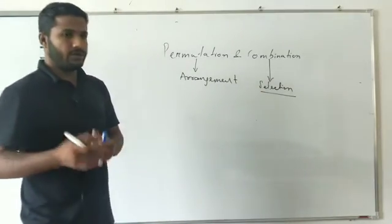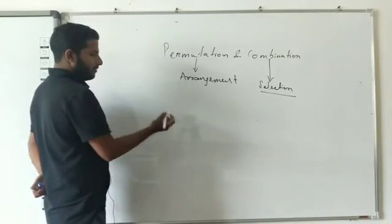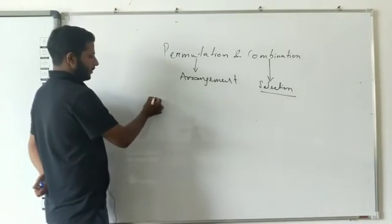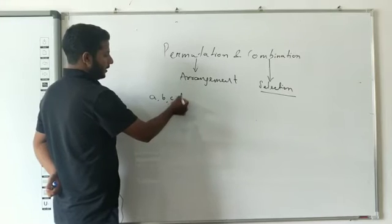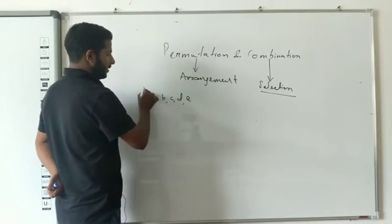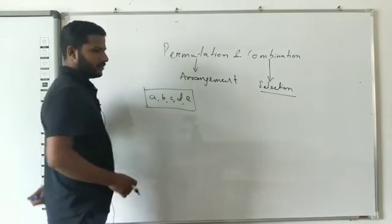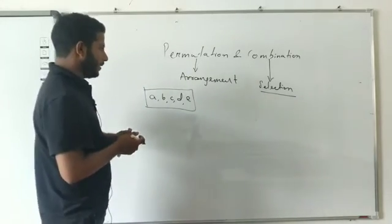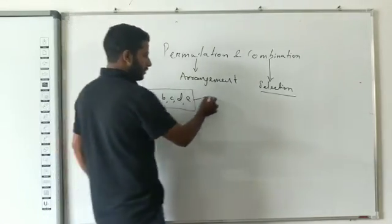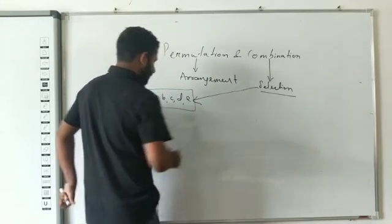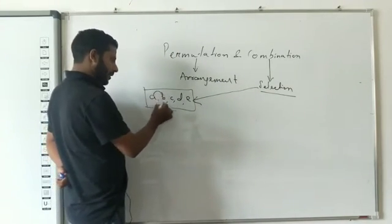Suppose you have alphabets: A, B, C, D, E. The arrangement is permutation. If you choose two things, you can select an arrangement. So if you select, you can form combinations like A-B, A-C, A-D, A-E, and so on.